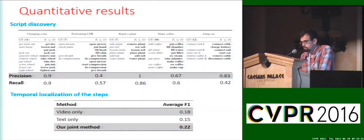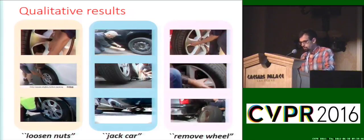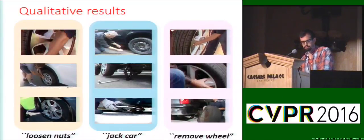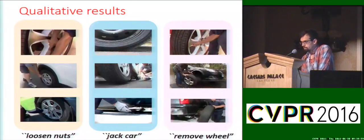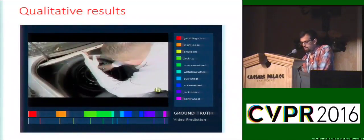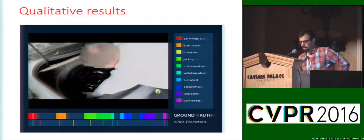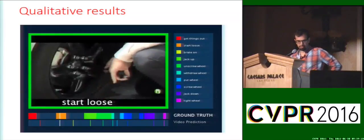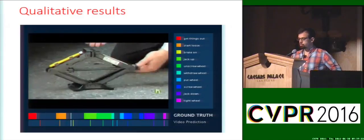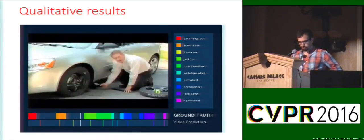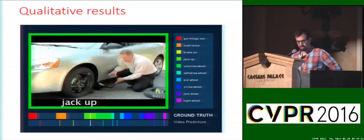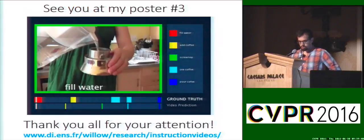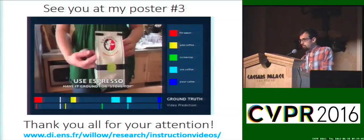I invite you to my poster to get more details about this. I would like to finish with some qualitative results. On this slide, you can see the time intervals chosen by the algorithm to represent three of the steps, and you can see the consistency of the visual appearance of each step. Finally, I display here the results for our whole video. On the right, you can see the steps that we discovered. On the bottom, you can see two bars — the top bar contains the ground truth and the second bar contains our video prediction. As you can see on this example, we are able to localize a good proportion of the steps accurately. The video fast-forwards to the next prediction, and the green frame is displayed when we are making a good prediction and the red frame otherwise. The dataset used here is available at our project webpage. Thank you all for your attention.